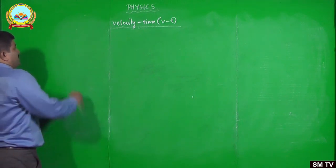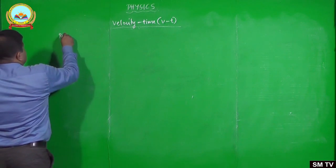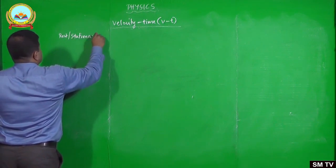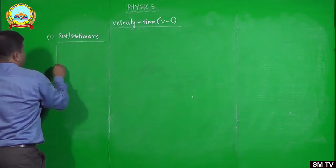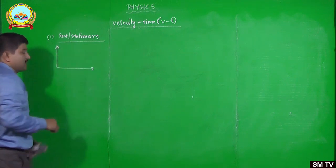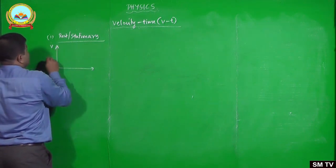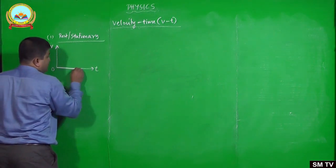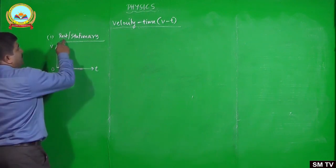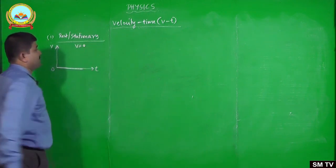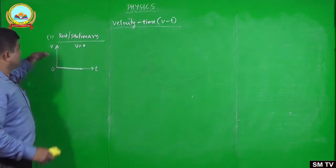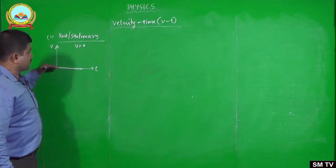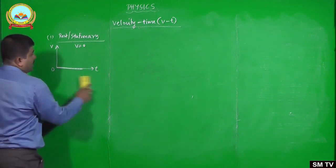The advantage of having a graph is that there is no need to represent the journey information in a big table — just one curve gives the idea of the nature of motion: whether it is accelerating, moving with constant velocity, or moving with negative velocity or acceleration. For the first case, the VT graph for a particle at rest is a straight line coinciding with the time axis, since velocity is zero.